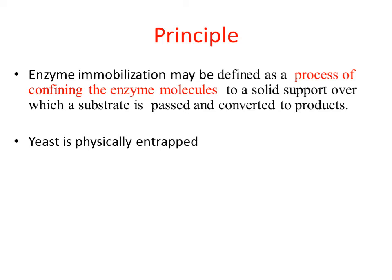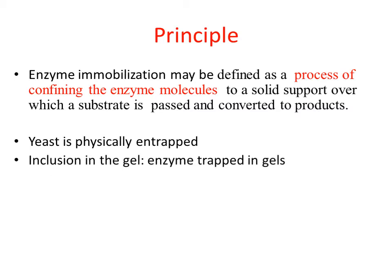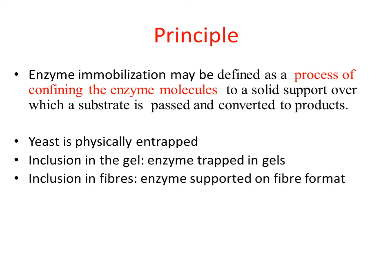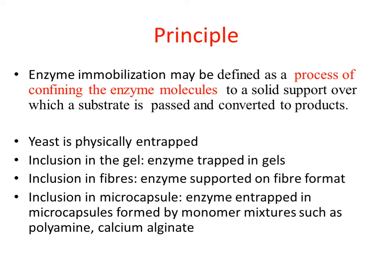What do we mean by entrapment? Entrapment means the enzyme can be entrapped into a cross-linked gel matrix by allowing the gel to be formed in aqueous solution containing one or more enzymes. Here, the enzymes are physically entrapped in the lattice and because of this they cannot escape by permeation. However, the substrate and product can diffuse in and out respectively due to their small size. In entrapment method, we have three different types: inclusion in gel, inclusion in fiber, and inclusion in microcapsule.